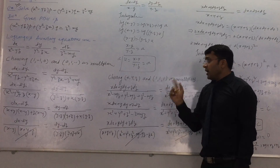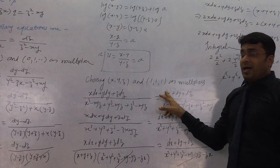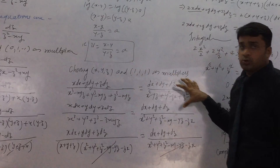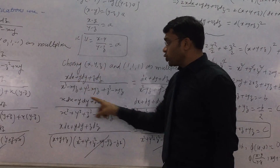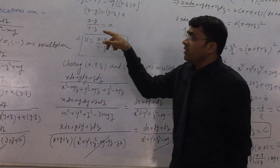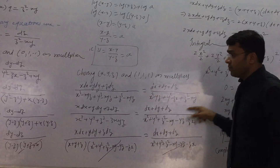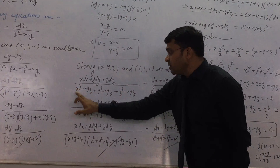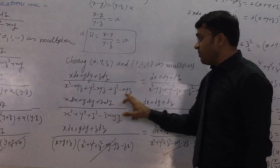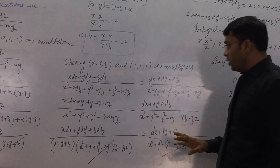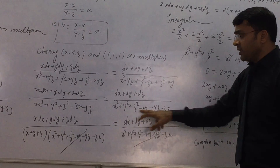For the second solution, we consider two sets of multipliers: x, y, z and 1, 1, 1. Using these, we form two ratios. Multiplying by x, y, z with the numerators and denominators, we get x cubed plus y cubed plus z cubed minus 3xyz in the denominator. Multiplying by 1, 1, 1 gives x squared plus y squared plus z squared minus yz minus zx minus xy in the denominator.